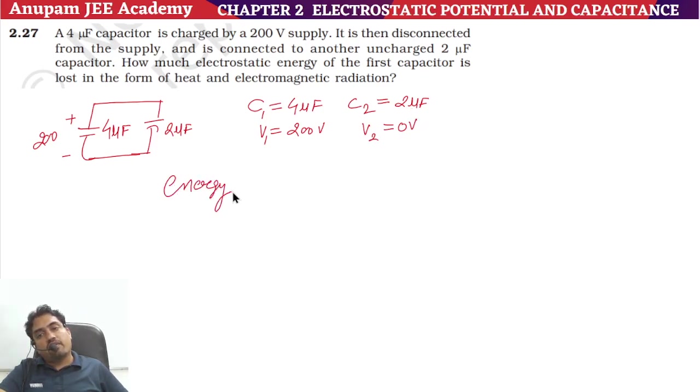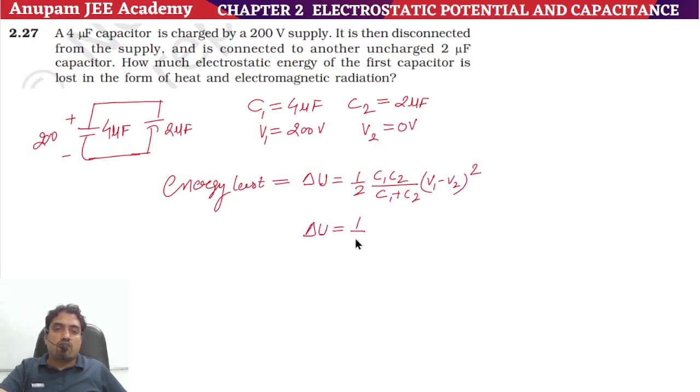The energy lost, delta U, is equal to 1/2 times C1C2 divided by (C1 plus C2) times (V1 minus V2) whole square. So delta U equals 1/2 times C1 value is 4, C2 value is 2, divided by C1 plus C2, which means 4 plus 2.